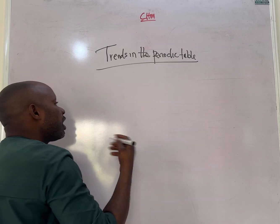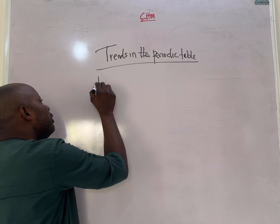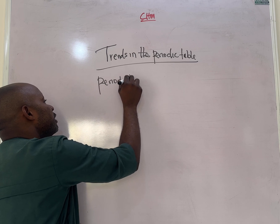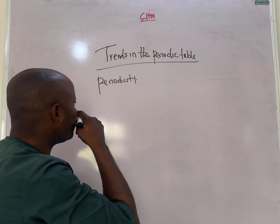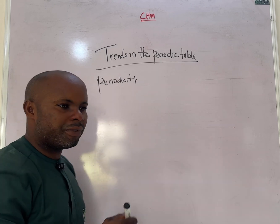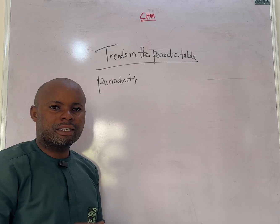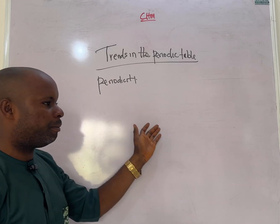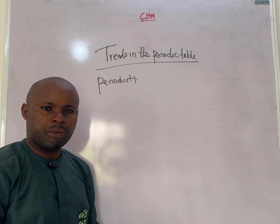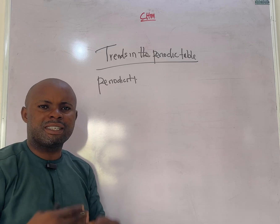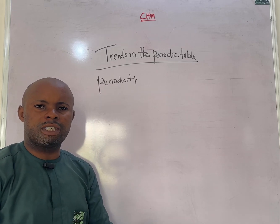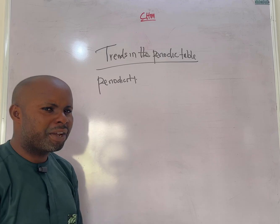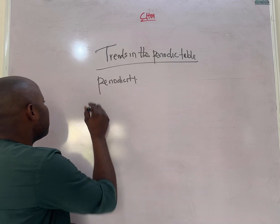Periodicity is defined as a variation in a regular pattern through which there is a change down the group and across the period. It is a variation in the properties of elements down the group and across the period, following a regular pattern.